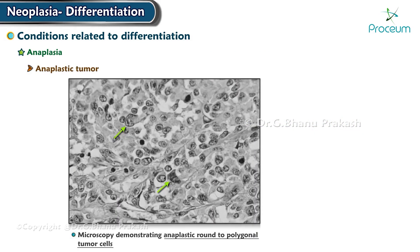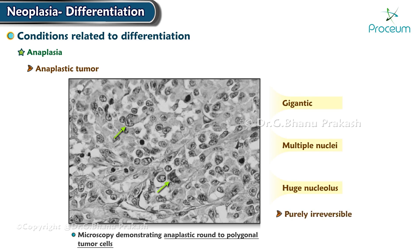Anaplastic tumors tend to be composed of cells that are very strange looking. They may be gigantic, contain multiple nuclei, or have a huge nucleolus. These odd-looking cells are often called anaplastic. Anaplasia is purely irreversible.